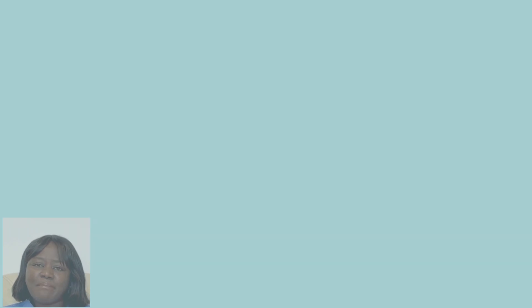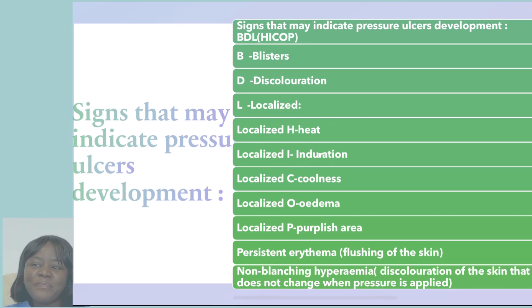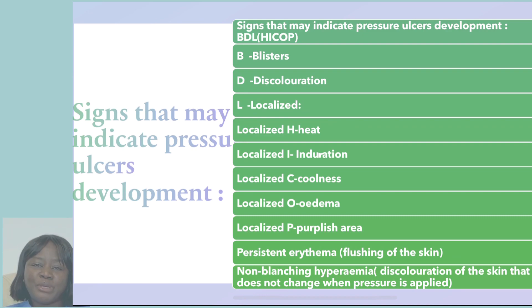The signs that may indicate that someone is developing pressure sores — we have an acronym used at Unified OSCE that will help you get your points at your fingertips. Just follow the acronym: BDL ICOP. The B stands for blisters.